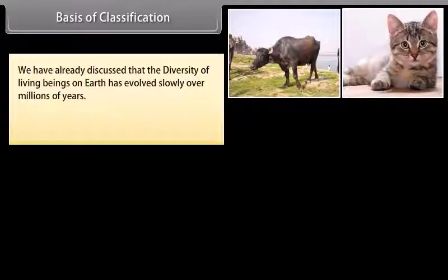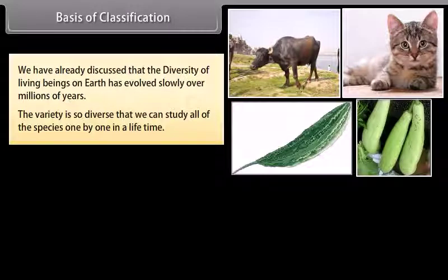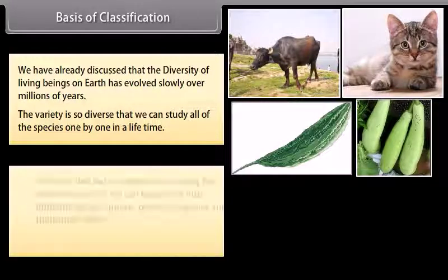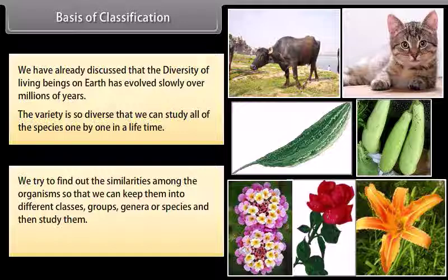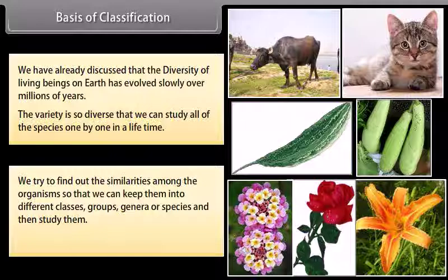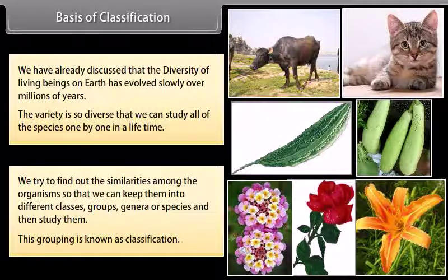We have already discussed that the diversity of living beings on earth has evolved slowly over millions of years. The variety is so diverse that we cannot study all of the species one by one in a lifetime. So we try to find out the similarities among the organisms so that we can keep them into different classes, groups, genera, or species and then study them. This grouping is known as classification.